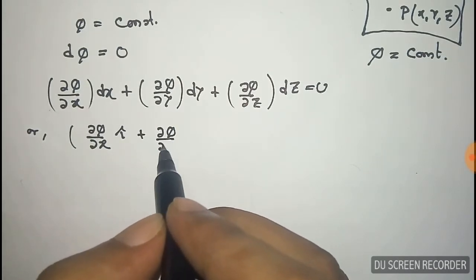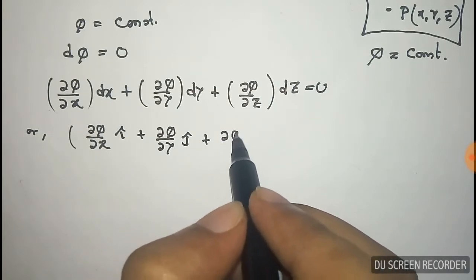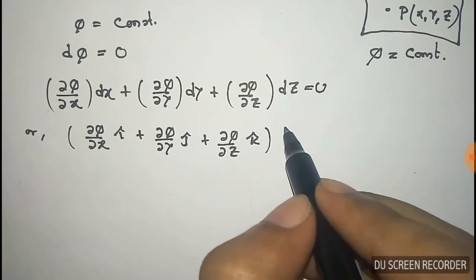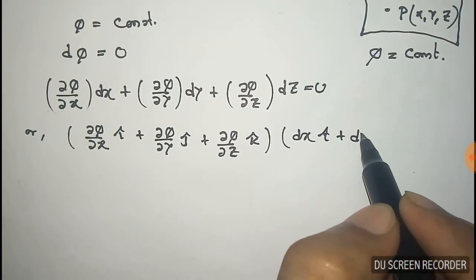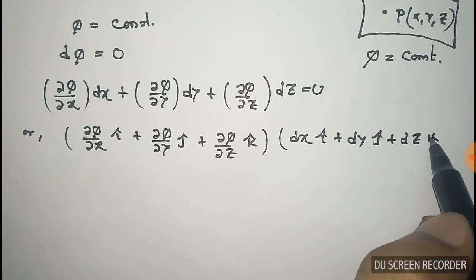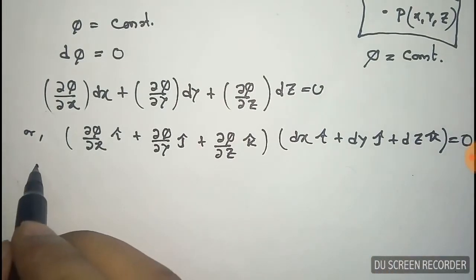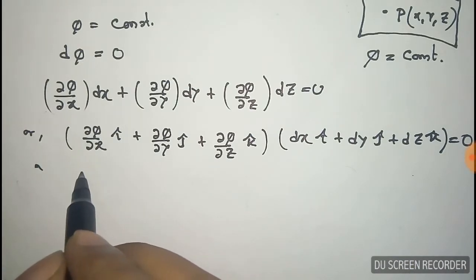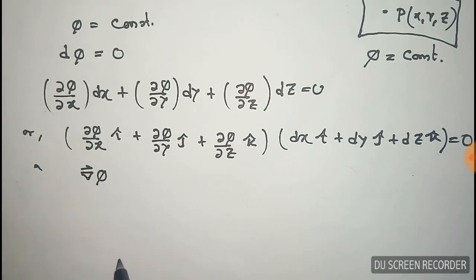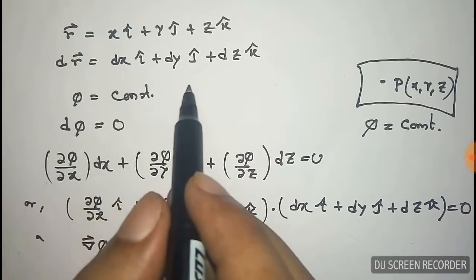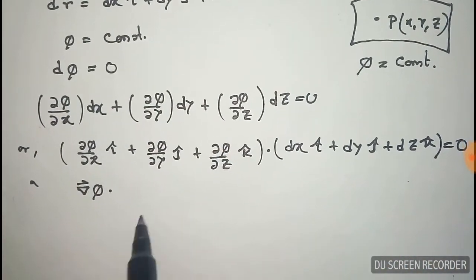We can write this total expression as the scalar (dot) product of two terms: (∂φ/∂x·i + ∂φ/∂y·j + ∂φ/∂z·k) · (dx·i + dy·j + dz·k), and this equals zero. This first term is the gradient of φ, and the second term is the dr vector we derived earlier.